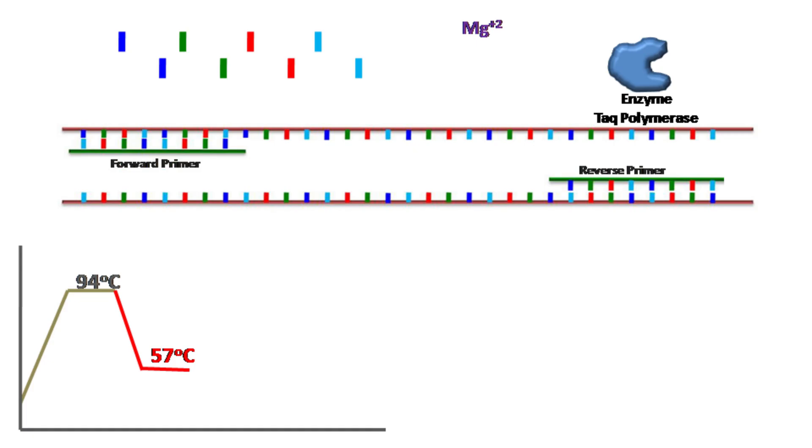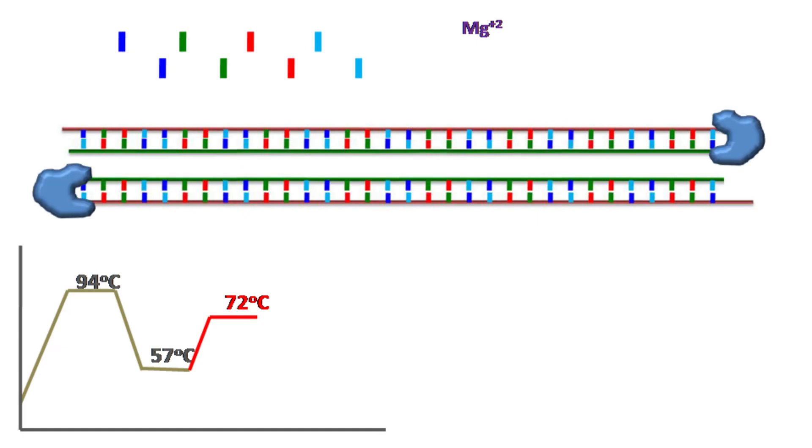Once the primers bind, the temperature is now raised to 72 degrees Celsius. At this temperature, the enzyme Taq Polymerase gets activated, and it starts adding dNTPs to the DNA, leading to synthesis of new strands.